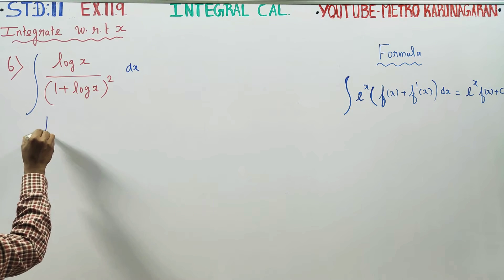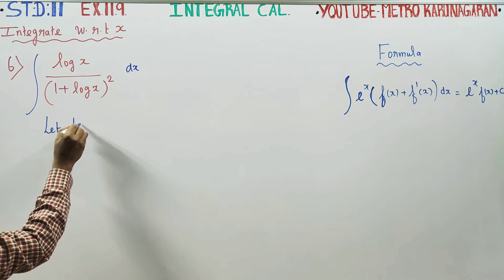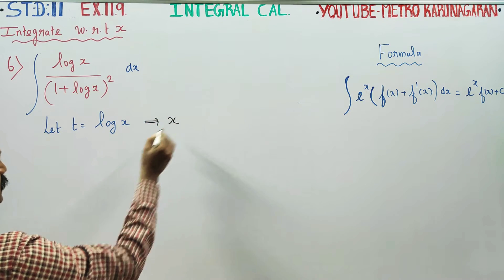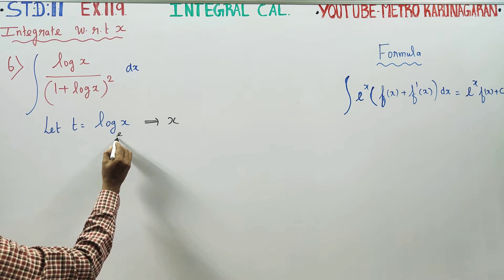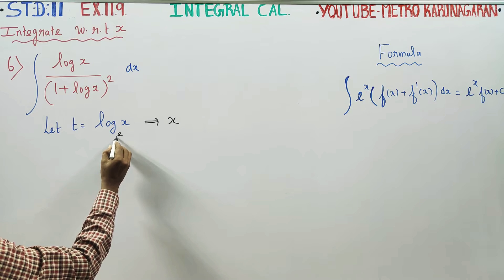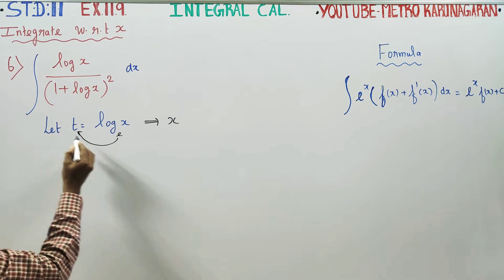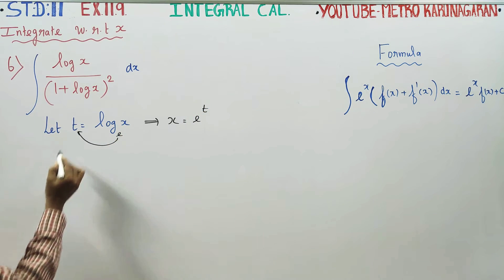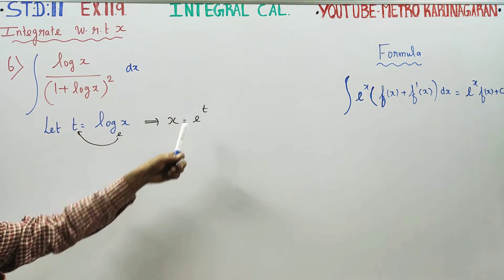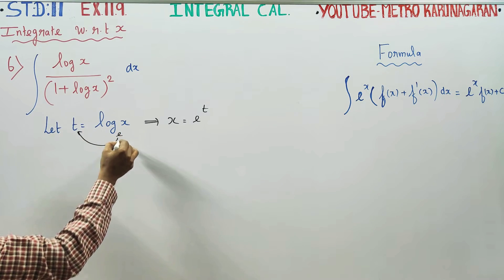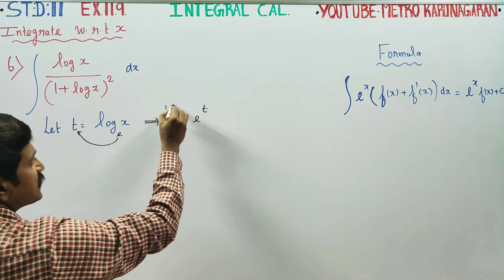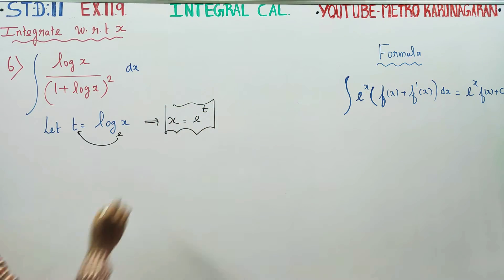First of all, I am going to use substitution method. Let t equal log x. If you make this logarithmic form into exponential form, what is the value of x? X is equal to e power t. This is called exponential form.